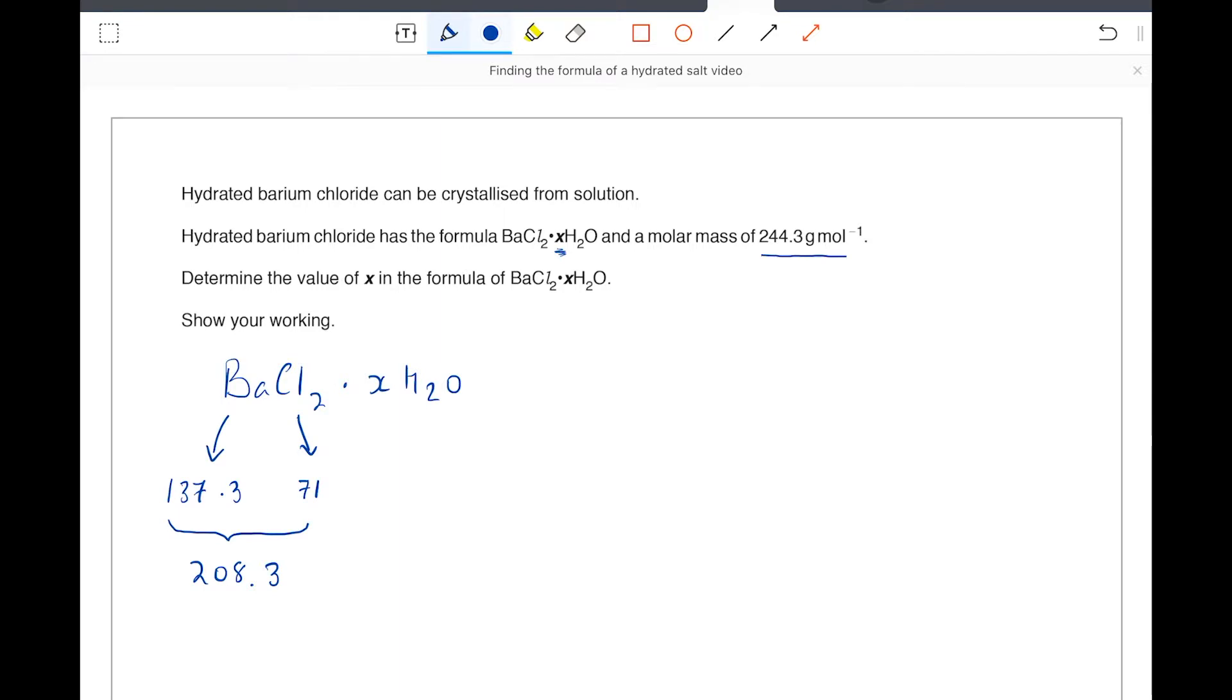Which means that whatever's left, so that would be 244.3, the total, take away how much we've got as a result of the barium chloride, 208.3, equals 36. That's all very well, but we know in chemistry that ratio is working in moles, not in masses.